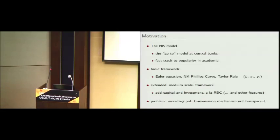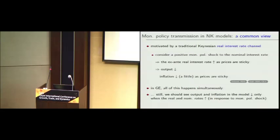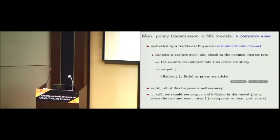The comment I make here is that the problem I see with this model is that the transmission mechanism is not very transparent overall, and I'll explain what that means. The common view of the monetary transmission mechanism is what's called the Keynesian real interest rate channel. Consider a positive monetary policy shock to the nominal interest rate. Because prices are sticky, the nominal rate goes up, the real rate goes up, and when the real rate goes up, consumption and investment typically fall. Inflation falls as well, so we get a fall in output and a fall in inflation.